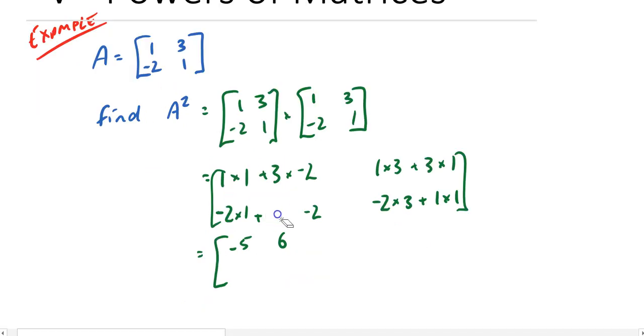Notice a little mistake I made here. So A squared is simply A times A, go through the motions and now we have negative 5, 6, negative 4, negative 5.